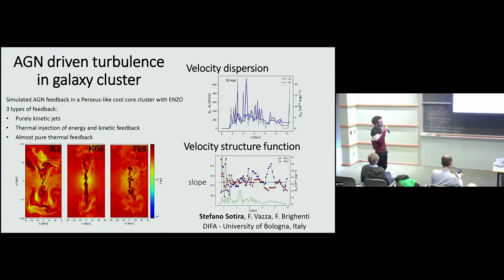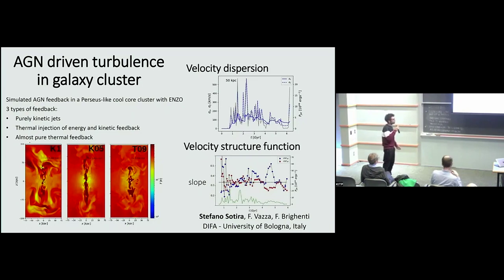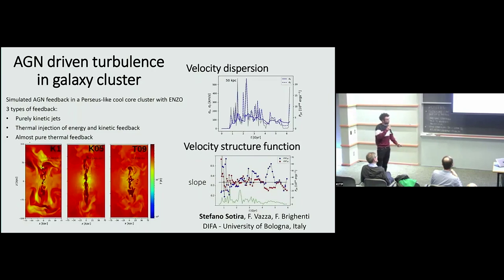I focus on velocity dispersion at the center of the cluster and found cases where the velocity dispersion is comparable to that observed in the Perseus cluster, depending on the feedback injection, the AGN activity, and the line-of-sight direction. I also studied the velocity structure function and found that there is no trivial correlation between the three-dimensional velocity structure function and the projected one — making it non-trivial to recover the real velocity structure function from observations.